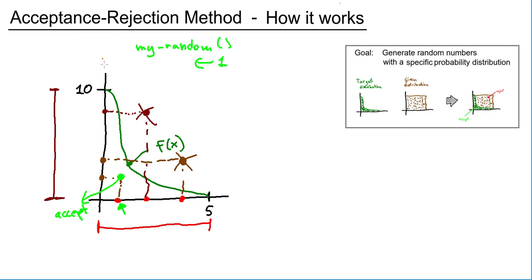So what's happening in the acceptance rejection method is that we have two random numbers. The first random number is here on the x-axis. That tells us that's a number that we would return if we return it. And the second random number is here. It's like the control number that tells us whether we return it or whether we reject it. That is the pictured version of the acceptance rejection method.